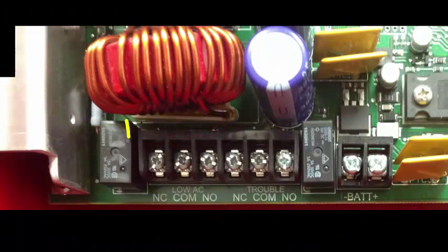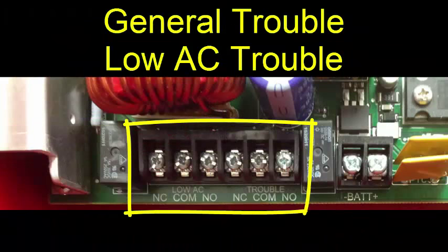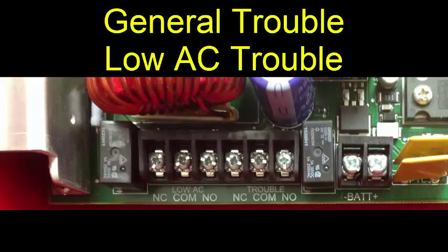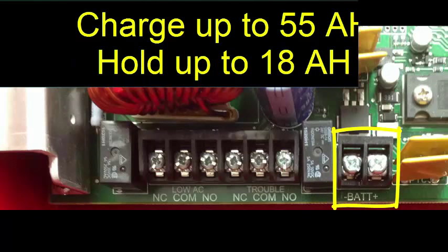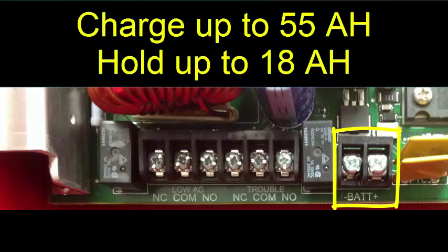There are two trouble relays, general trouble and AC loss. The general trouble relay will trigger when there is any trouble condition on the power supply. The AC loss relay will trigger when the panel loses its dedicated power source. You can also program a delay time for the AC loss relay to trigger the general trouble relay. Moving to the right, we find the battery charging terminals. The panel will charge up to two 55 amp hour batteries and the cabinet will hold two 18 amp hour batteries.